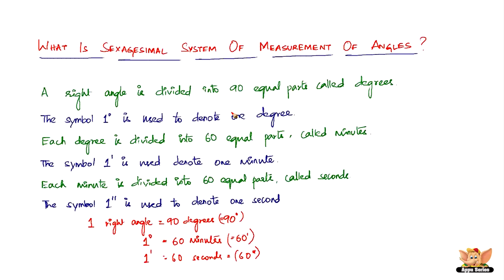So this is what the sexagesimal system of measurement of angles is all about. These are the important points used to measure an angle with the sexagesimal system. This concludes this video. I will see you in the next videos with a discussion on the centesimal system of measurement of angles.